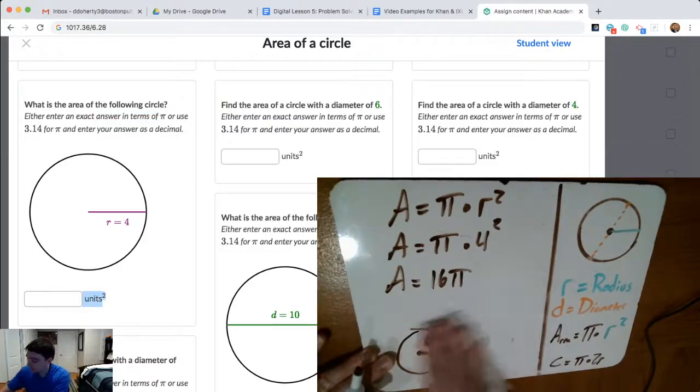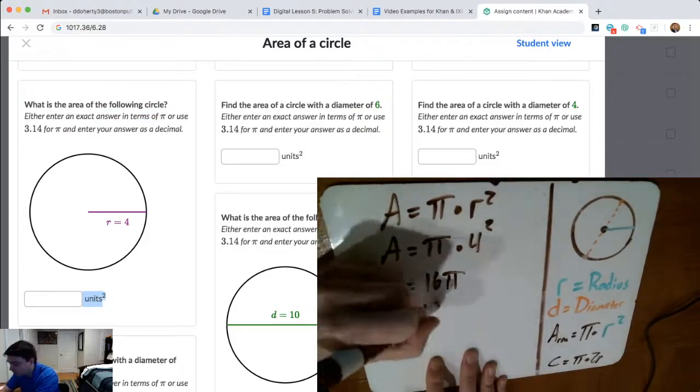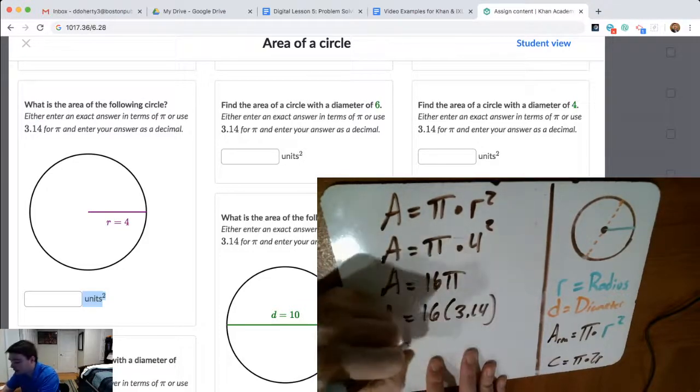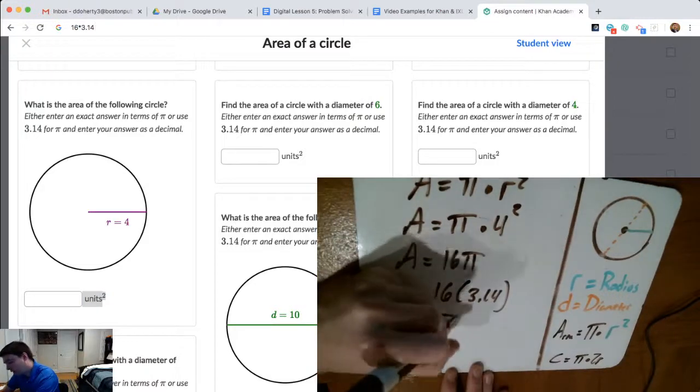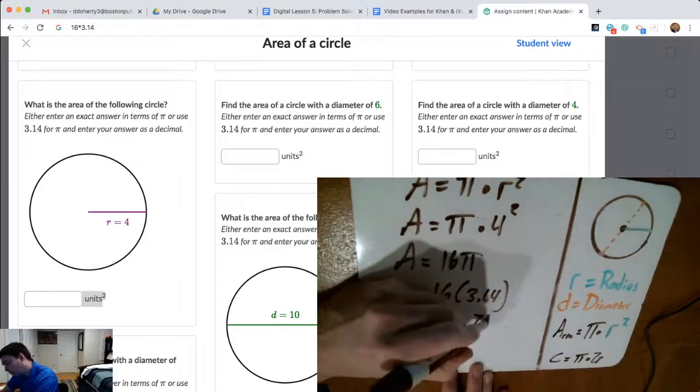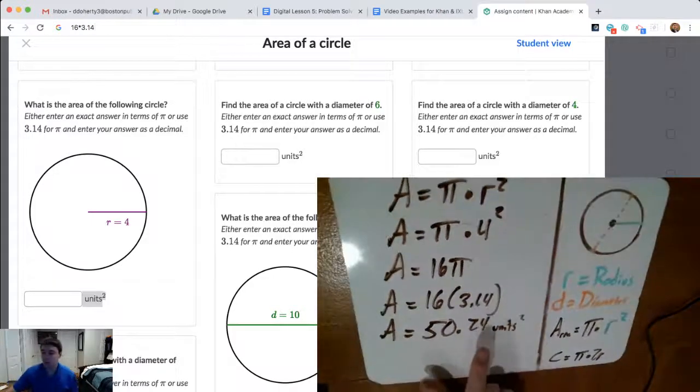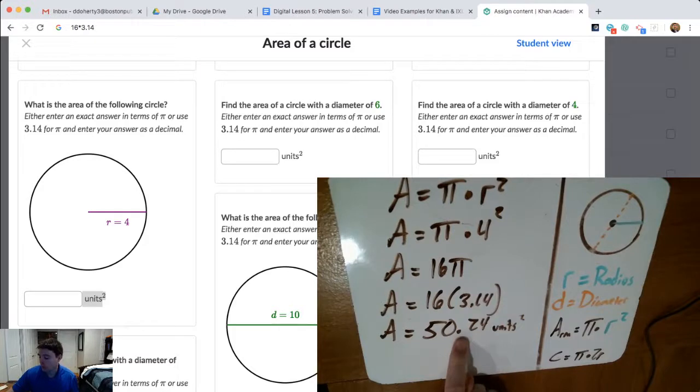Alternatively, and this is what IXL requires for all of their circle problems, it seems like you could use 3.14 for pi. So I could keep going, take 16, use a calculator to figure out what 16 multiplied with 3.14 is, and that gives me 50.24. So I could say 50.24 units squared for the area of this circle, and Khan Academy also would accept 16 pi as the area. That's equivalent or the same thing as 50.24 if we're using 3.14 for pi.